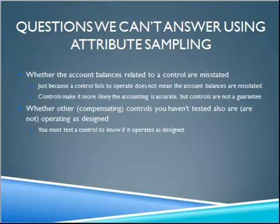What kinds of questions can't we answer using attribute sampling? The biggest one is whether the account balances related to a control are misstated. We can find that a big set of internal controls works perfectly and the client is doing the accounting wrong — processing every transaction similarly but all being processed wrong. On the other hand, the client might not have any good internal controls in an area such as payroll, but the payroll person does their job perfectly and payroll could still be correctly recorded.